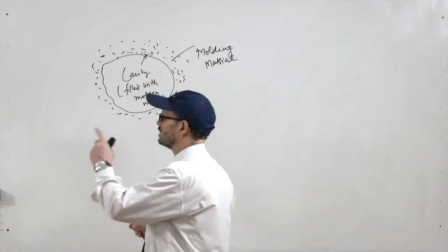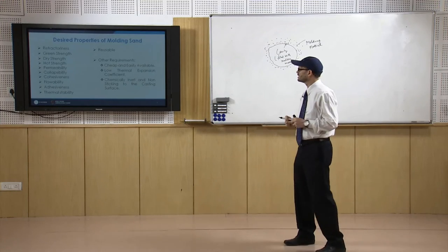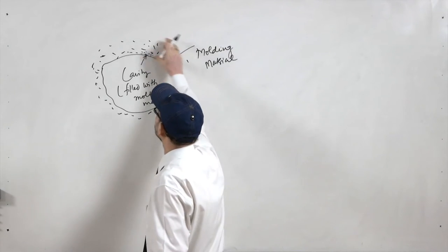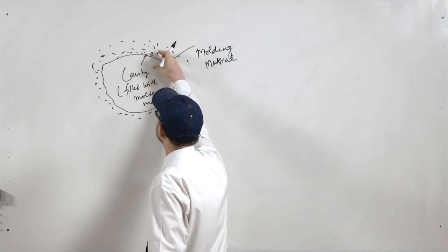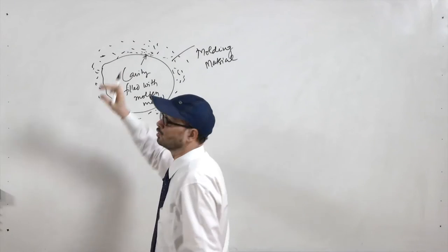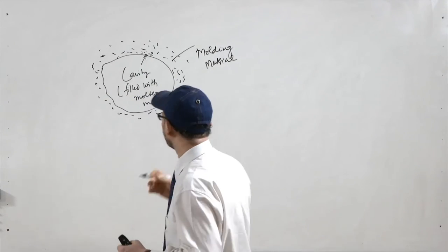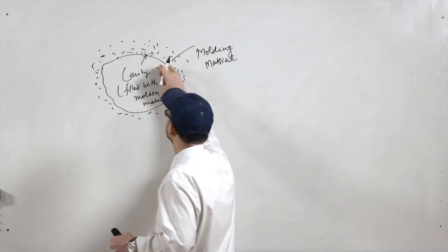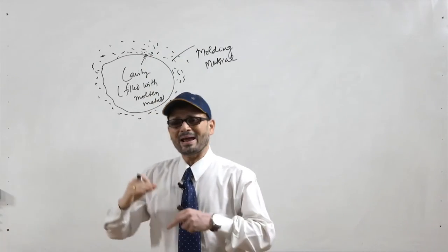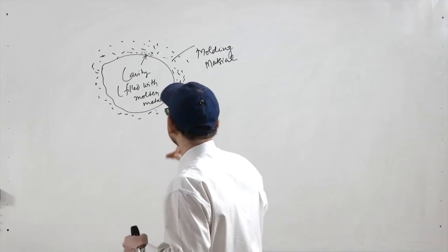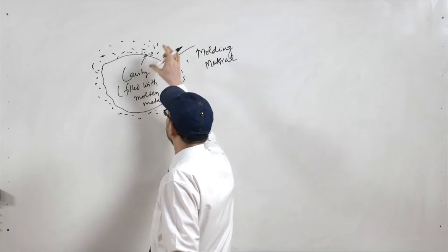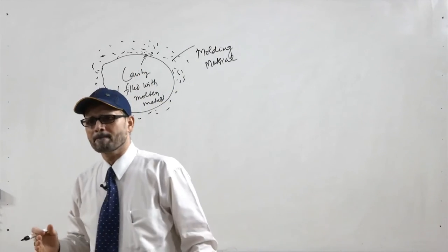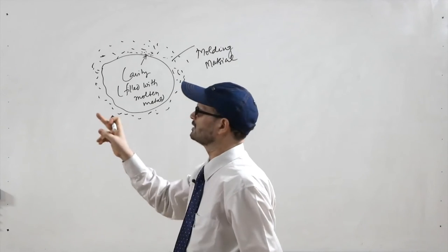Then comes hot strength. Hot strength is applicable when the liquid metal has been poured and all the moisture has gone, and the temperature of the whole mold is becoming very high because of the intimate contact with the liquid metal and heat transfer. At that high temperature, the ability of the molding material to maintain its shape and resist against metal penetration is known as hot strength.